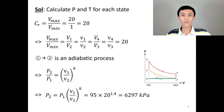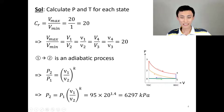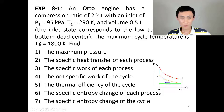To solve Otto cycle problems and calculate work and heat transfer for each process, it is best to first calculate the temperature and pressure at each state — states 1, 2, 3, and 4. At state 1 we know everything: pressure and temperature are given. Since the medium is air, we know all properties. At state 3 we also know the temperature. So let's start from there.